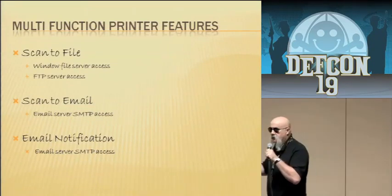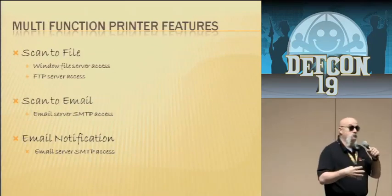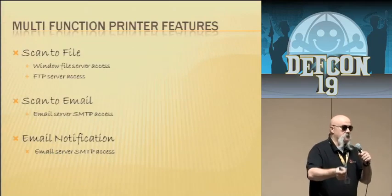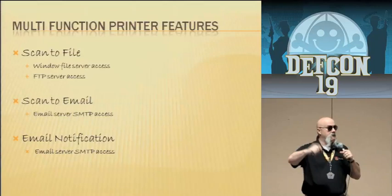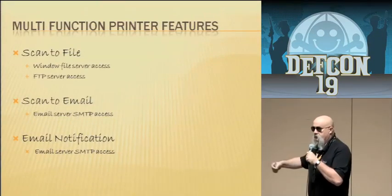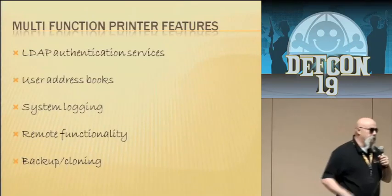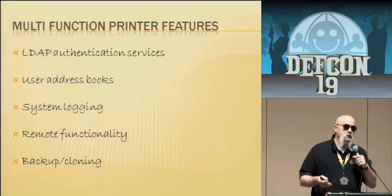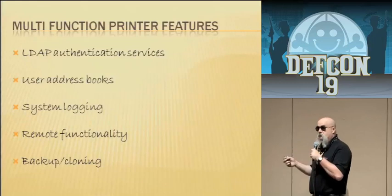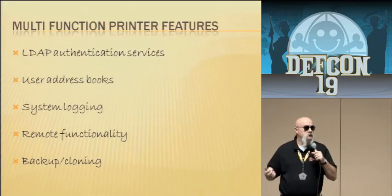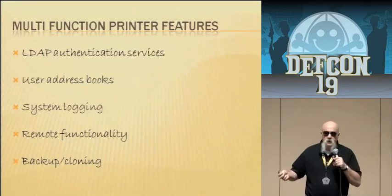Let's start off by talking about multifunction printer features. Not many people have actually logged onto the web interface on a multifunction printer, but that's generally what we're going to be talking about today. There's a wealth of features and information that can be pulled out of that. An example is scan-to-file functionality — the ability to walk up to that multifunction printer, scan something, and have it store on a Microsoft file server or FTP server. Also scan-to-email. These have to integrate into services like SMTP servers and SMB authentication onto Windows devices. One big one is LDAP authentication — the ability to go up to that device, authenticate yourself to the printer, and have it give you specific features or functions associated directly with you.